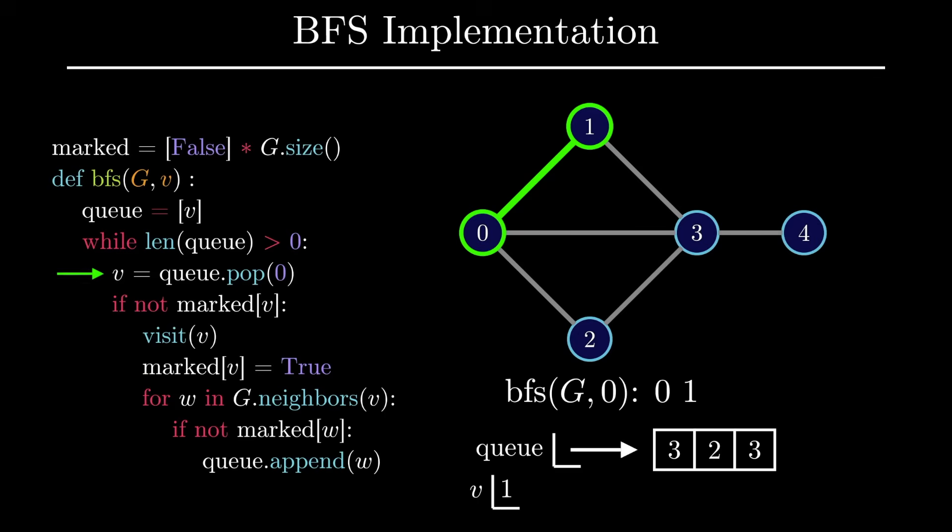We then go back into the loop and pop off vertex 3 from the front of the queue. This vertex has not been visited yet, so we again visit and mark the vertex. As a result, vertex 3 becomes the third vertex in the BFS order.